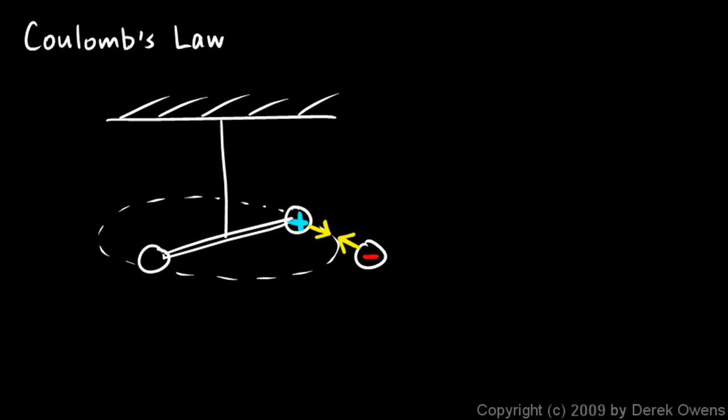Now you might recognize this experimental setup as very similar to that done by Cavendish to determine the gravitational force. Henry Cavendish came up with this idea, essentially this apparatus for measuring extremely small forces, a very sensitive apparatus, and used it to measure the strength of the gravitational force. Coulomb essentially applied the same type of apparatus, used the same type of apparatus, applied the same ideas to study the strength of the electrostatic force.